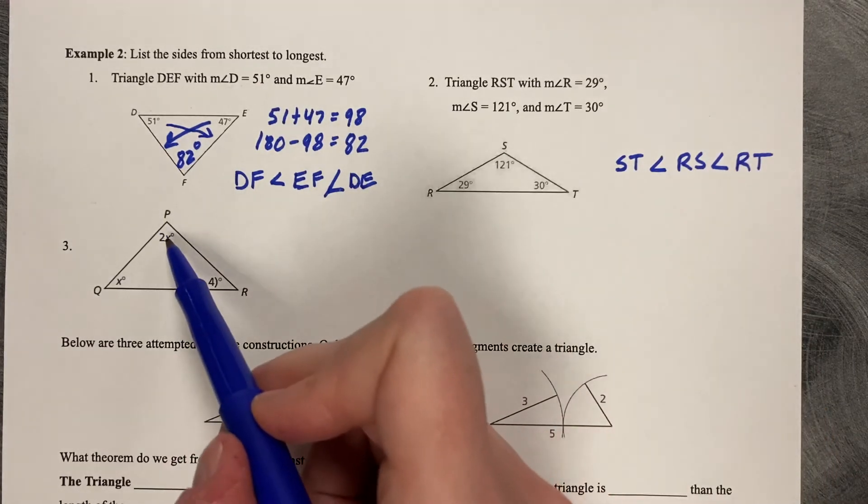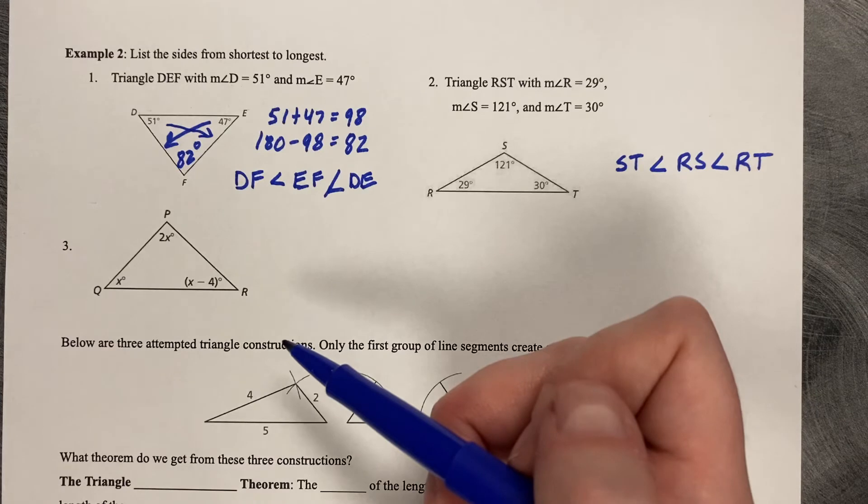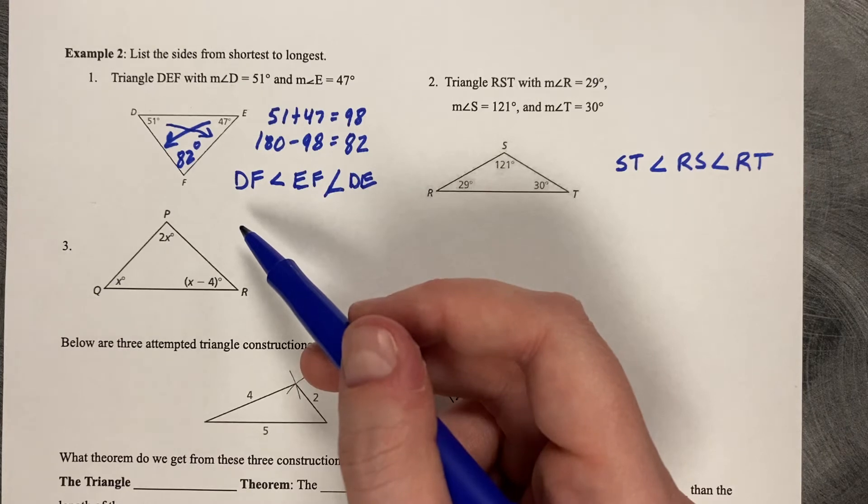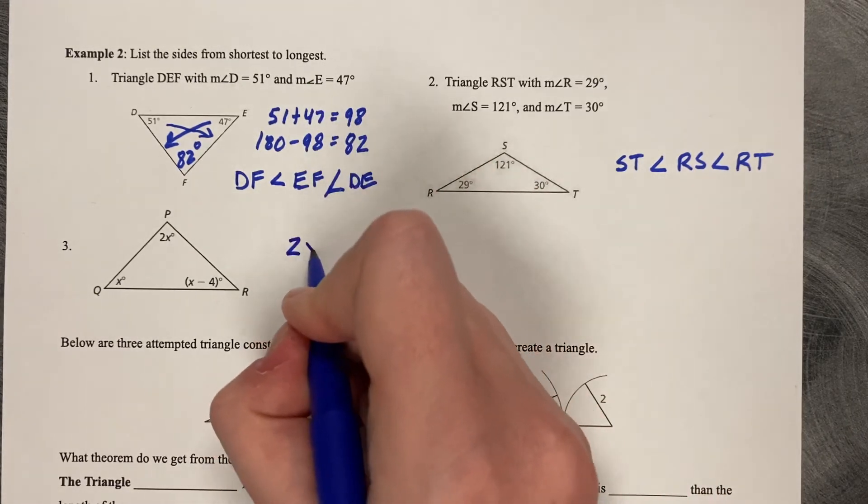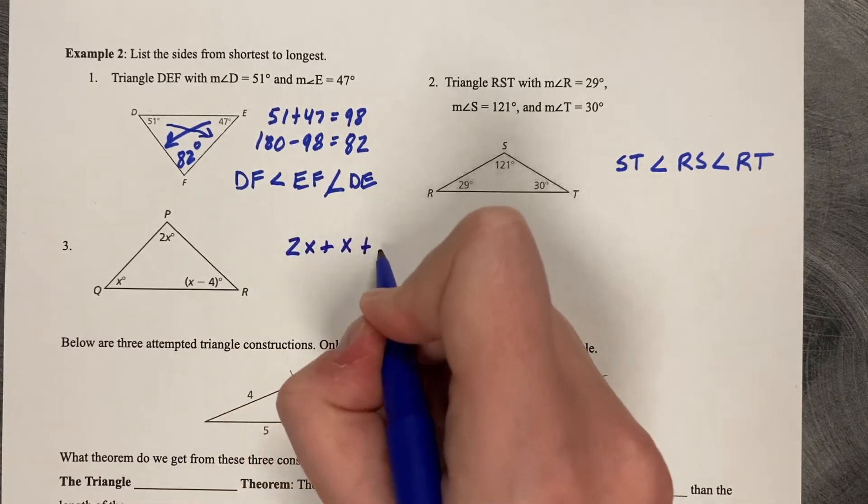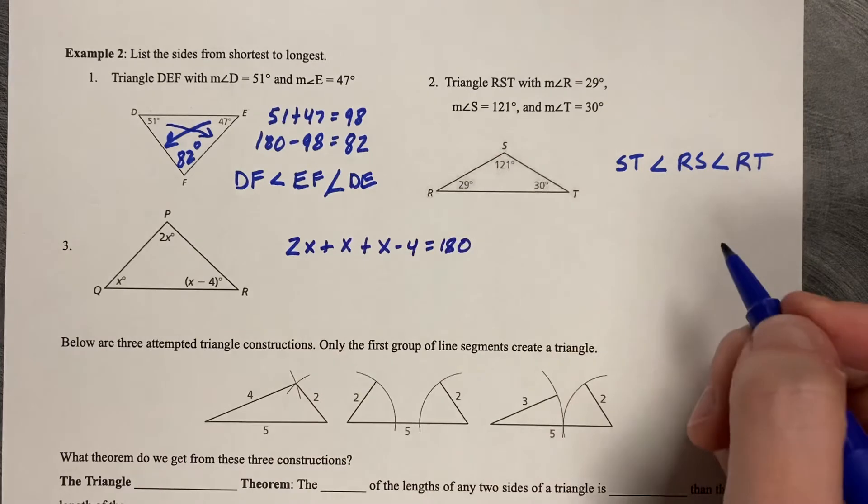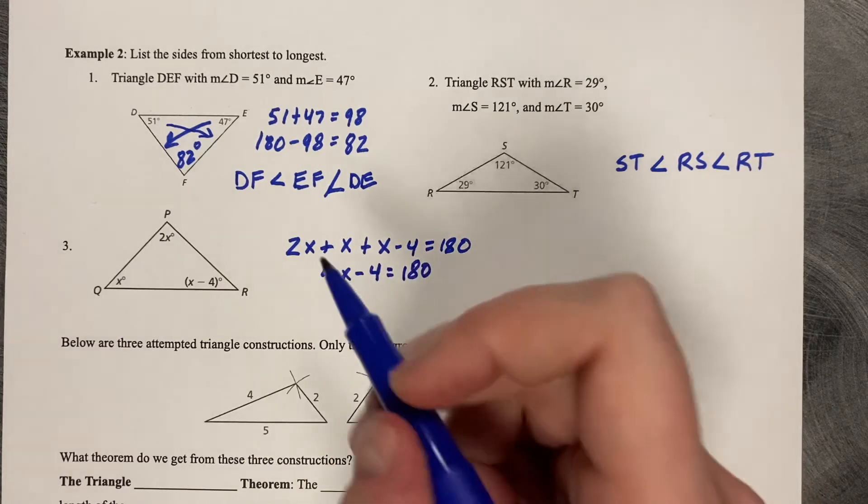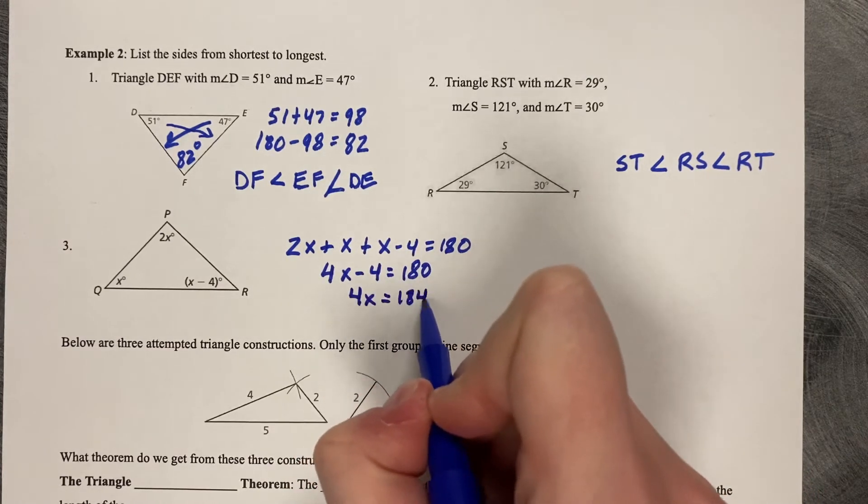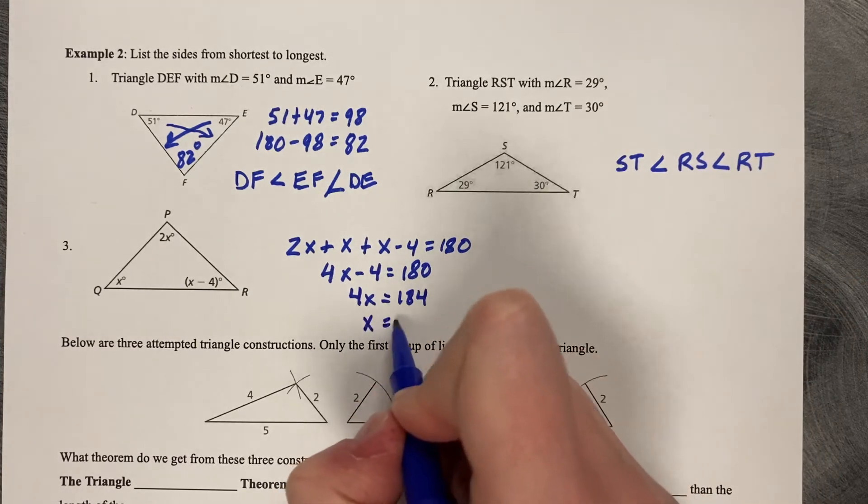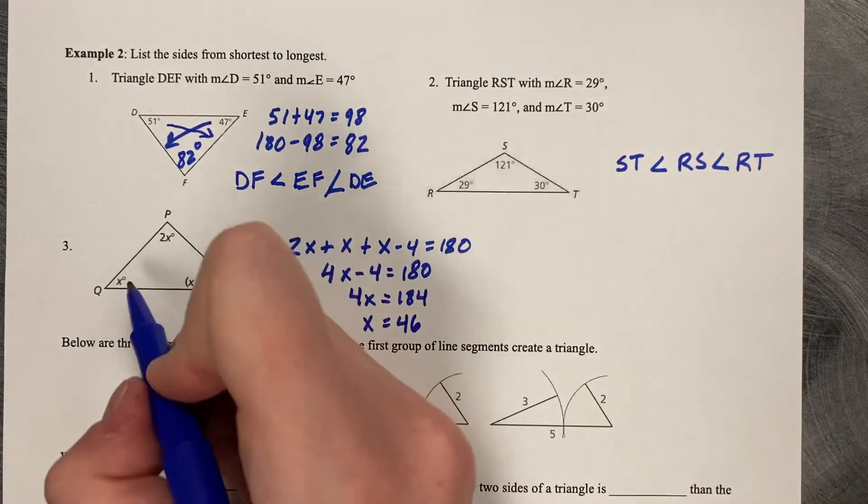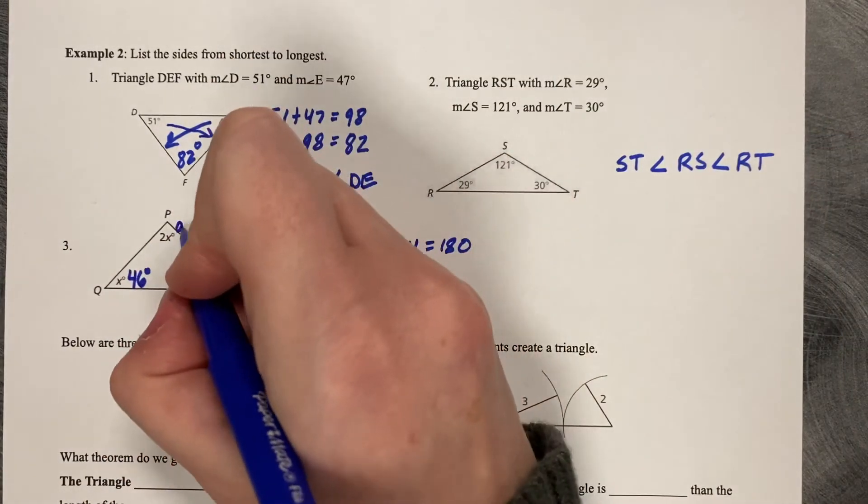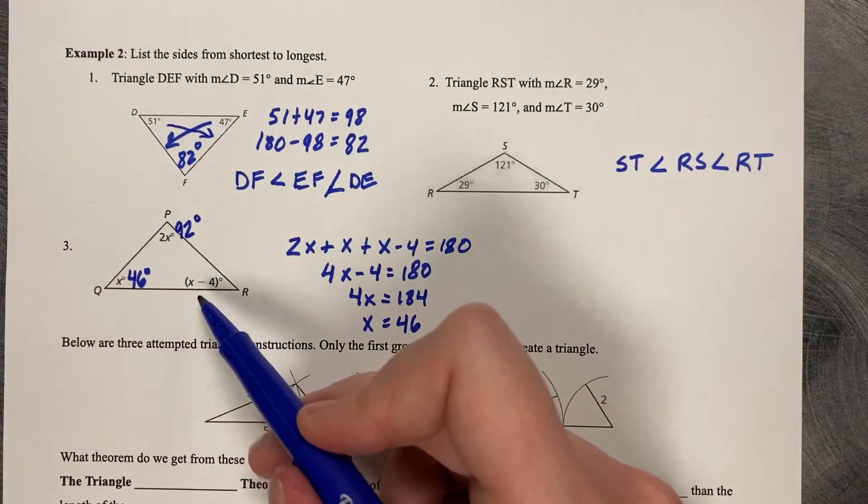This last one here, I've got variables in the spots for angles. So I can't do these ones yet without knowing what they are. So again, we're going to use triangle sum theorem because we know three angles in a triangle add to 180. So 2X plus an X plus X minus 4 is 180. 4X minus 4 equals 180. Add 4. 4X equals 184. Divide by 4 and X equals 46. So that means that this corner angle here is 46. You double it to get your top angle. So that's 92. And 46 minus 4 is 42.